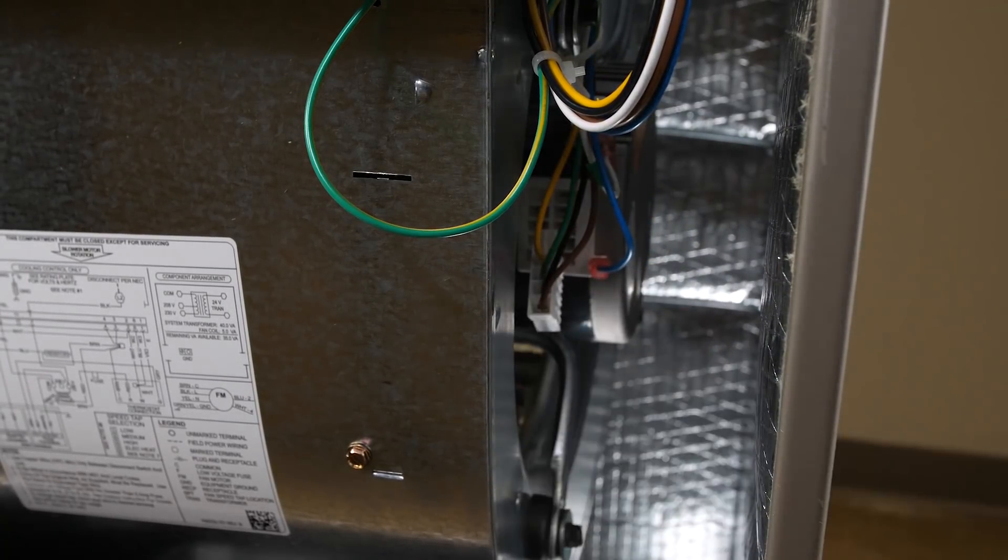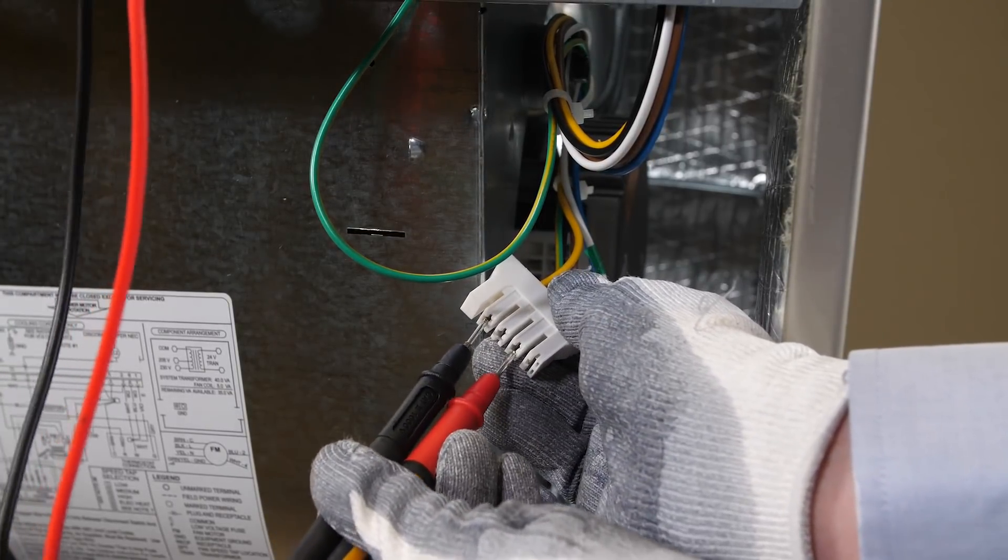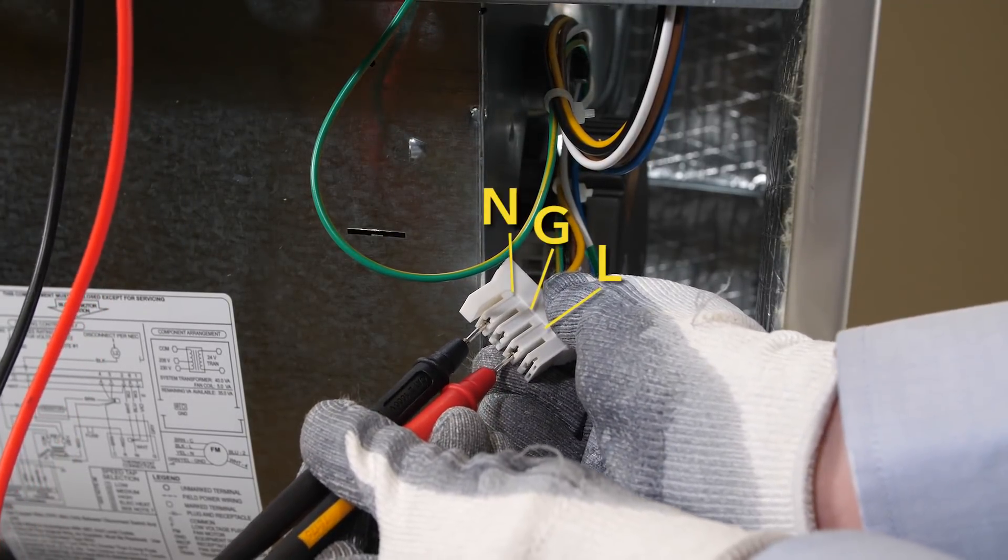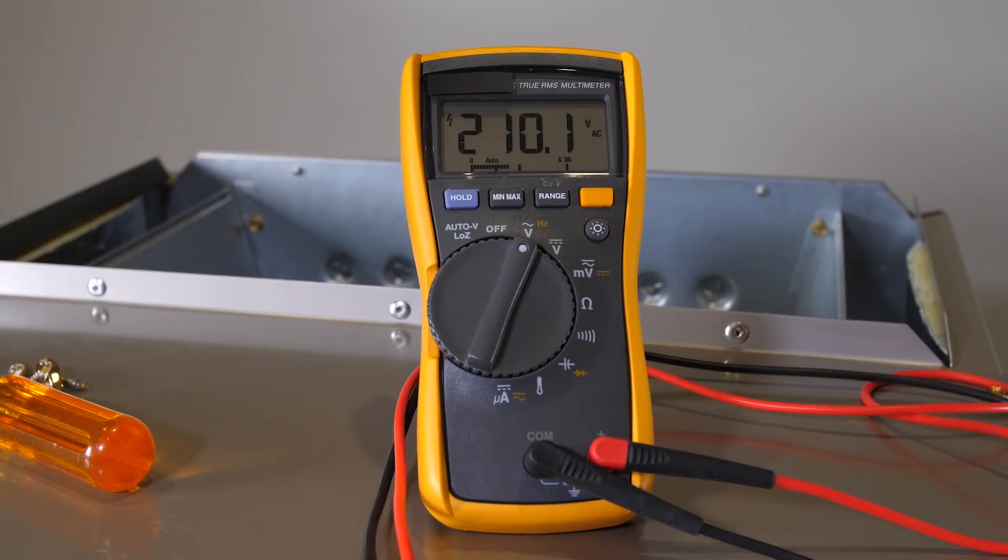Turn power back onto the unit. Using a voltmeter, check for proper high voltage at the L, G and N connections at the harness. Voltage should read between 208 and 230.